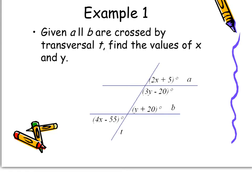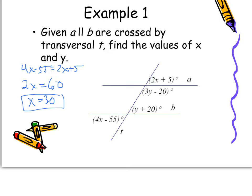In this problem, we're given that lines A and B are parallel, cut by transversal T, and we want to find the values of X and Y. The two angles labeled in terms of X are alternate interior angles, so they're congruent. That gives us 4X − 55 = 2X + 5, so 2X = 60, meaning X = 30.